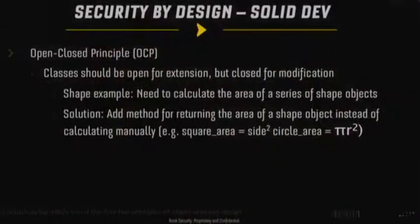The open-close principle: objects should be open for extension but closed for modification. I like the shape example. If I had a shape object and needed to calculate its area, it would be better to have a method within the shape to return the area — rather than me inferring it's a square and multiplying side by side, or a circle and computing pi times radius squared. Exposing an area method on the shape allows you to extend that class much more easily than you might otherwise.